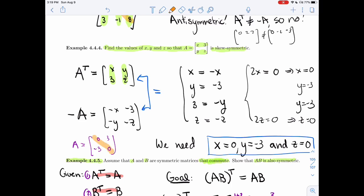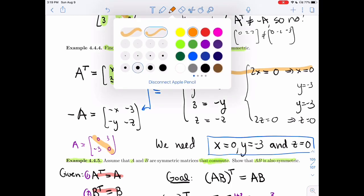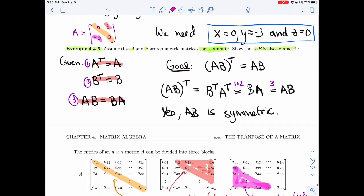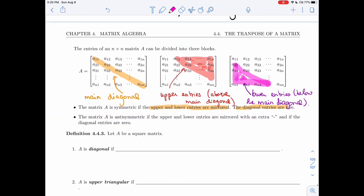The diagonal must be 0, and you can see why it happens over here. You end up with x equals minus x, and that only works if x is 0. And then these two are mirrored, but with an extra minus. So the matrix is anti-symmetric if the upper and lower entries are mirrored with an extra minus, and if the diagonal entries are 0.